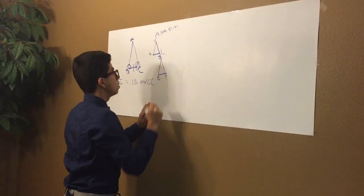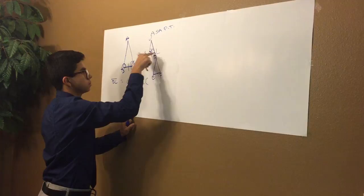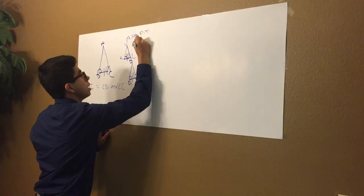So angle K and angle L are two consecutive angles, and right here is the segment. Angle E and angle F and the segment EF. So now, angle K is congruent equal to angle E.